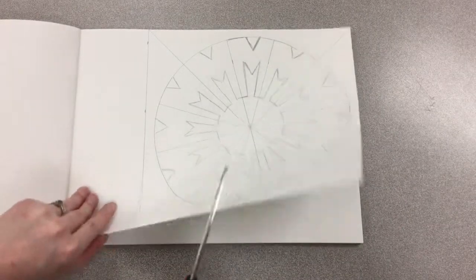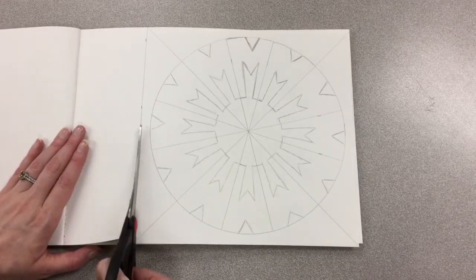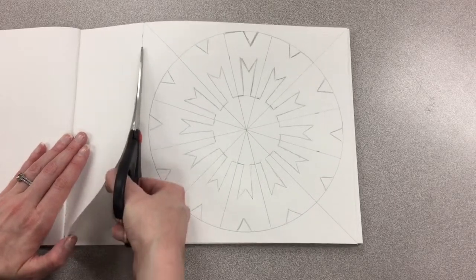Now that I've traced my M into all of my sections, I'm going to take a pair of scissors, and I'm going to cut my sketch out of my sketchbook so that I can transfer it onto my canvas panel.